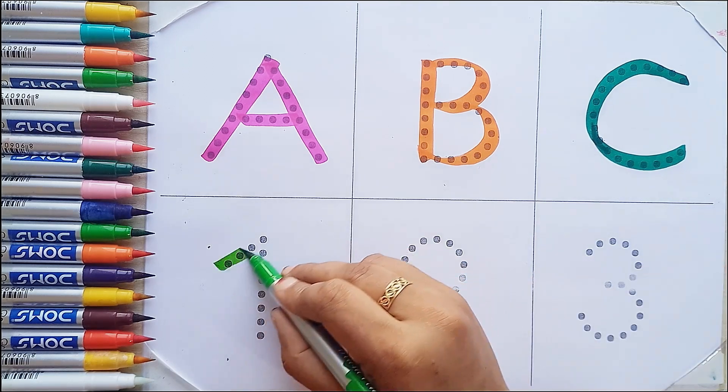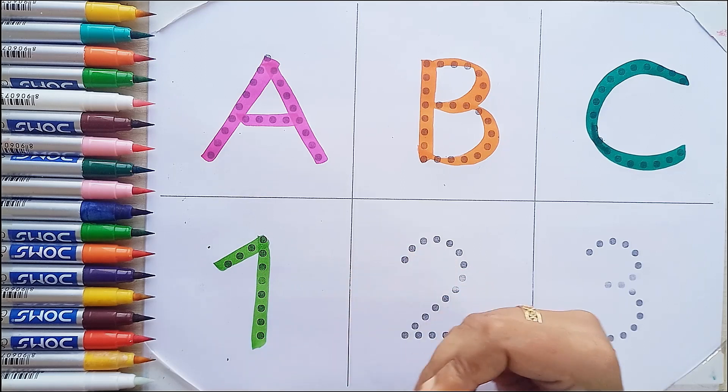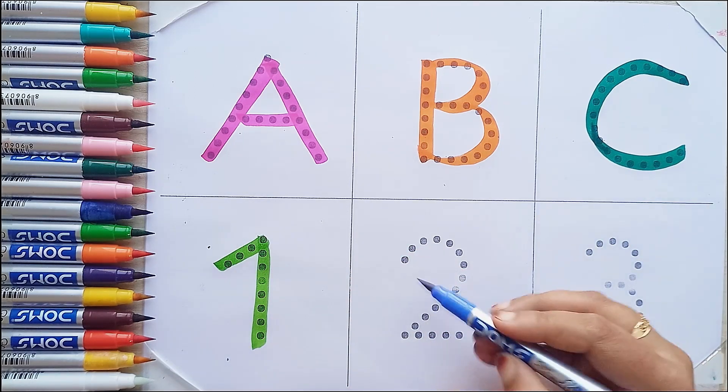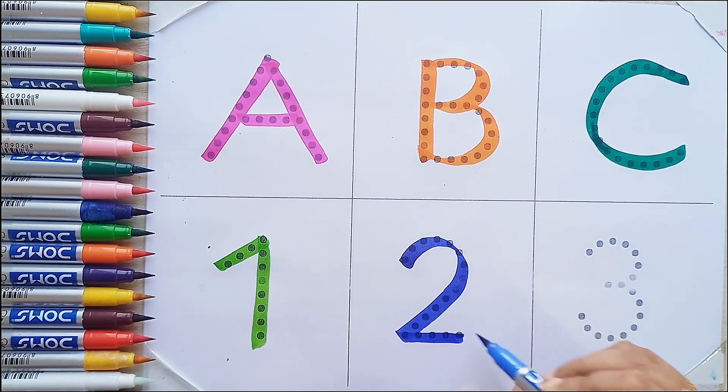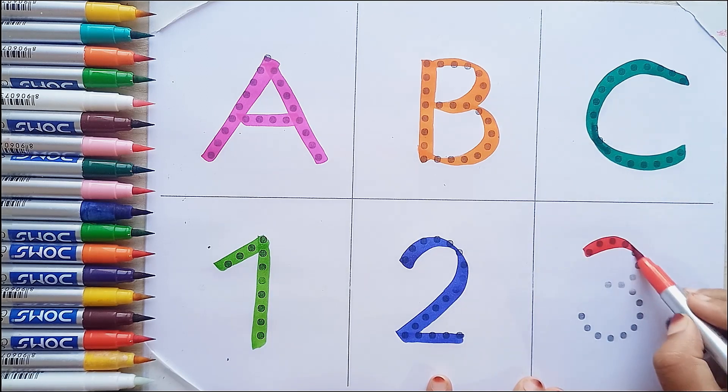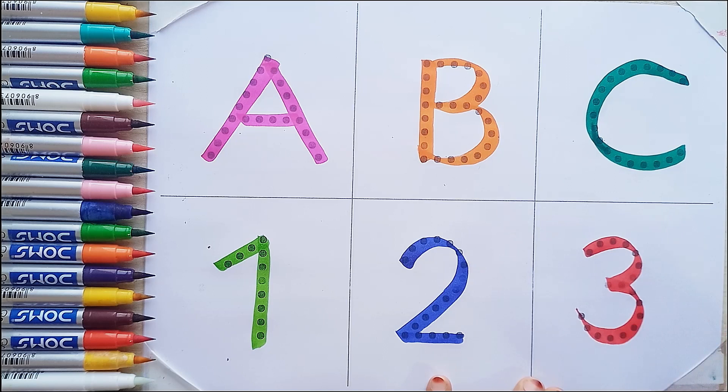Light green color. One. O, N, E. One. Blue color. Two. T, W, O. Two. Red color. Three. T, H, R, E, E. Three.